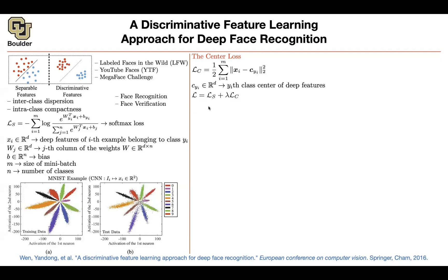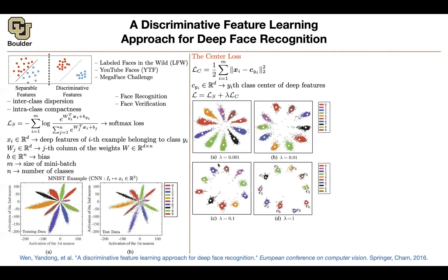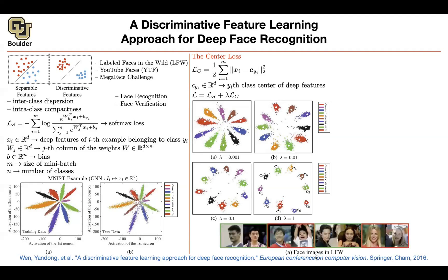It's a combination of the softmax loss and the center loss. Depending on the strength of your lambda parameter, your images are going to keep clustering around their corresponding centers, giving you more discriminative features. This is useful when a new image comes in — that's the open-set problem. If images of two people fall within the same cluster, you'll know they are the same person. Without sufficient discriminativeness, it ends up being confusing.